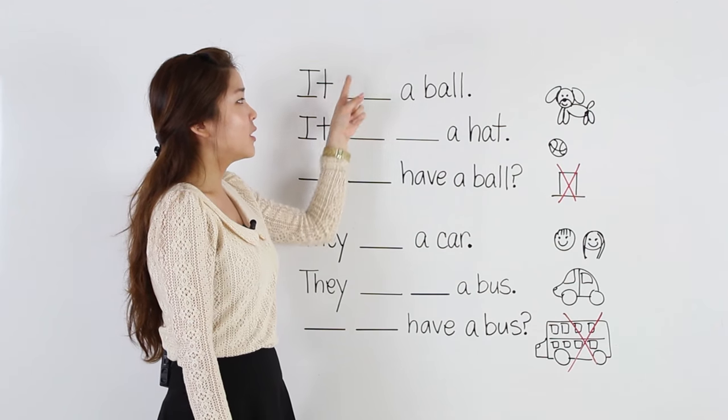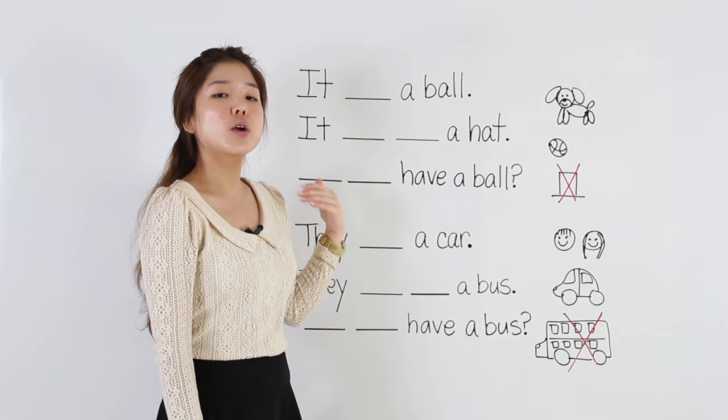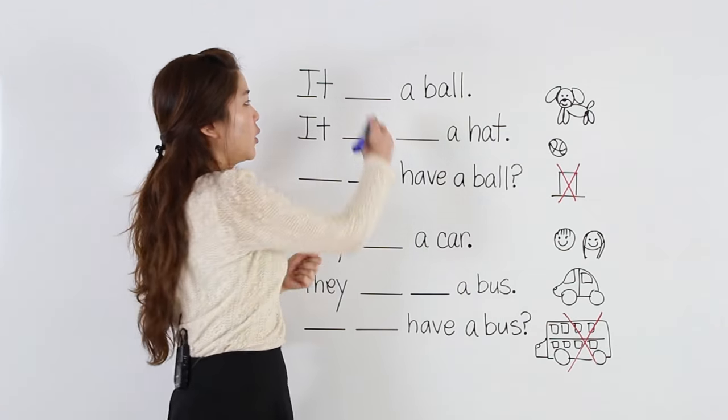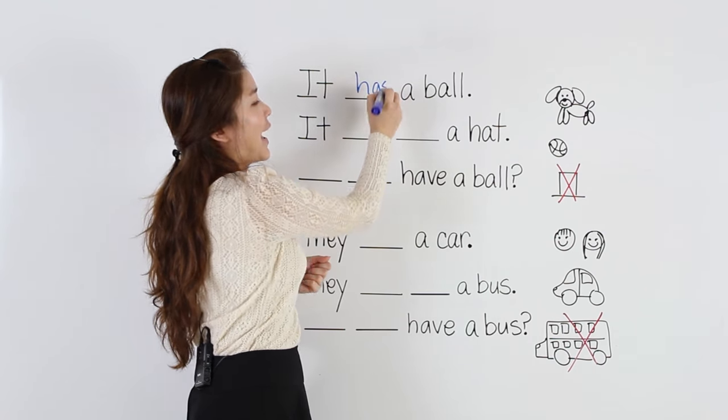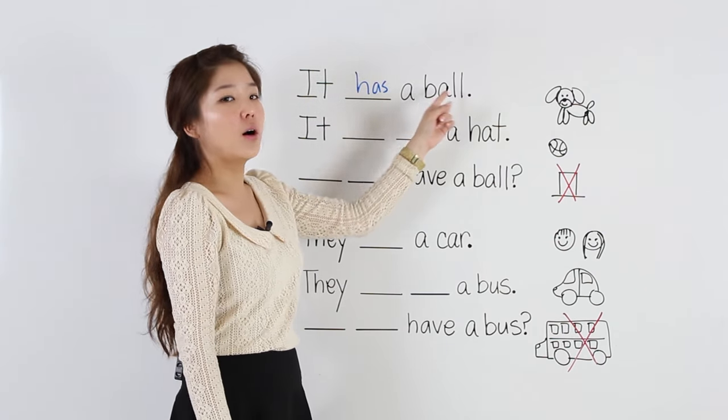Okay, with it, do we use have or has? We have to use has. It has a ball.